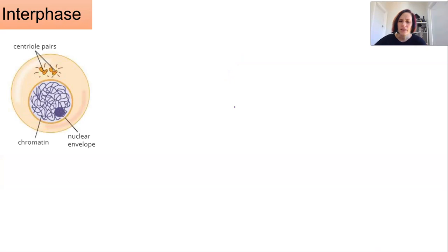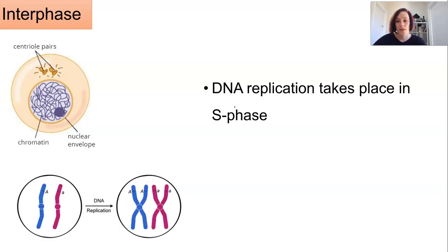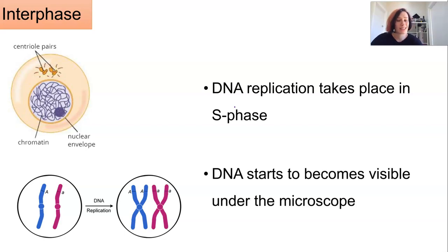Interphase works essentially the same in the cell cycle as we know in mitosis. The DNA replication will take place in S phase and so the chromosomes will be in the form of sister chromatids held together at the centromere. At this stage they're still really long and stringy, they're only just starting to become visible under the microscope.